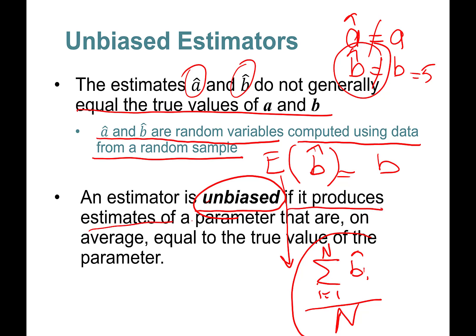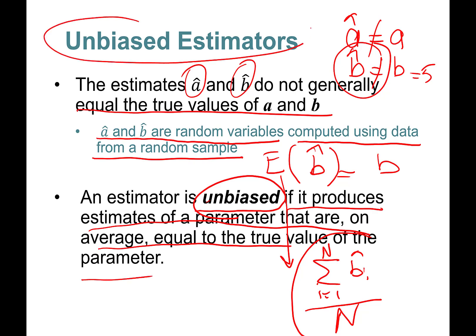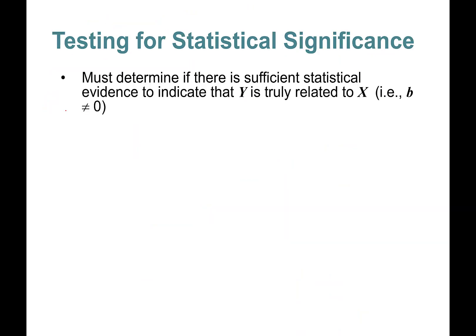An estimator is unbiased if it produces estimates that are on average equal to the true value of the parameter. Unbiasedness is something we're looking for. The good news is that the regression technique we use will give us unbiased estimators. The next step is to test for statistical significance.